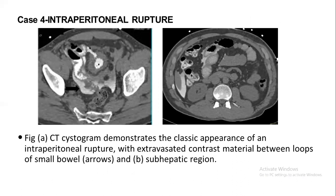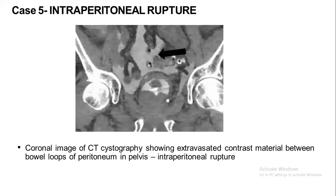Case 4: CT cystograms demonstrate the classical appearance of intraperitoneal rupture, which is extravasated contrast material between the bowel loops and in the subhepatic region, as shown by the arrows. Case 5: the coronal image of CT cystography showing extravasated contrast material between bowel loops and peritoneum in the pelvis, consistent with intraperitoneal rupture.